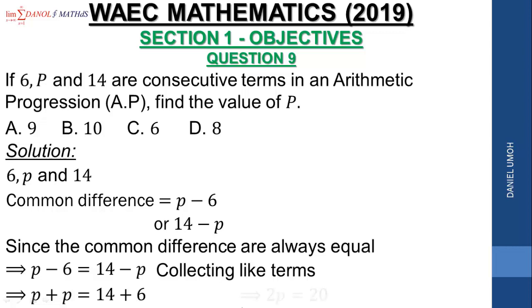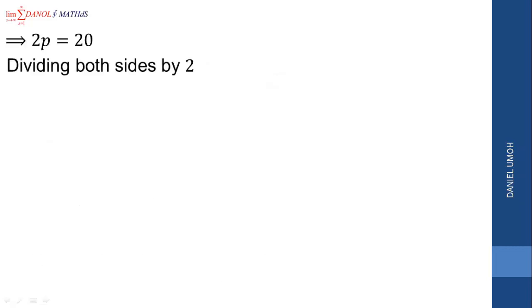So this means we have P plus P, which is 2P, then 14 plus 6 gives us 20. So dividing both sides by 2, we have 2P over 2 equals 20 over 2.